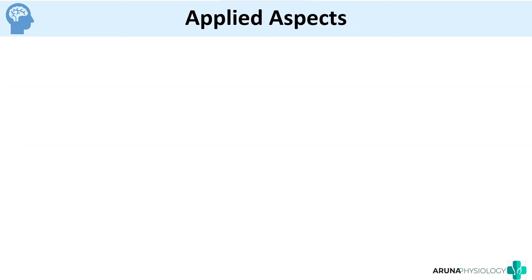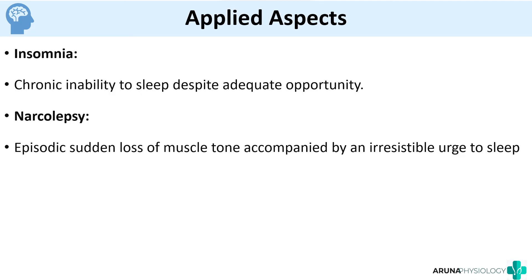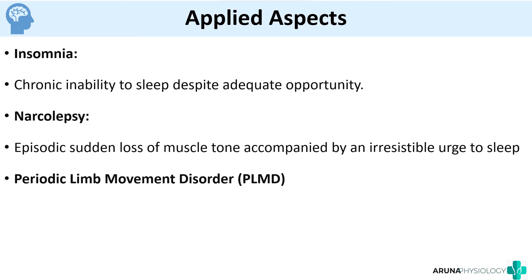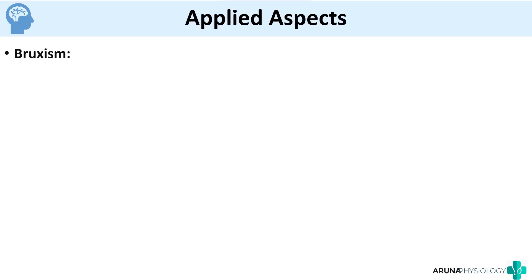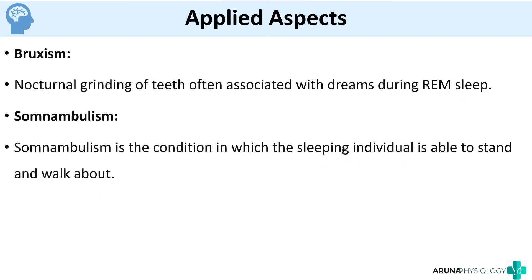For applied aspects, some basics about sleep disorders: Insomnia is a chronic inability to sleep despite adequate opportunity. Narcolepsy means episodic sudden loss of muscle tone accompanied by an irresistible urge to sleep — even if the subject was concentrating on something, the person will suddenly fall asleep. Periodic limb movement disorder is a sleep disorder in which there will be limb movements the person is not aware of. Bruxism is nocturnal grinding of teeth, associated with dreams during REM sleep. Somnambulism is sleepwalking.